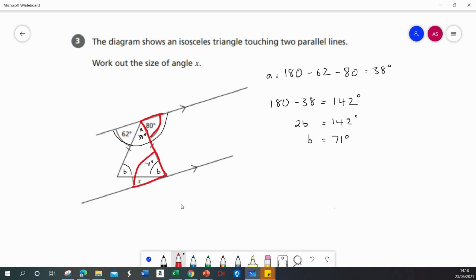Well I know that angle B is 71 degrees. So in order to work out angle x, I will subtract 71 from 80 and that tells me that angle x equals 9 degrees.